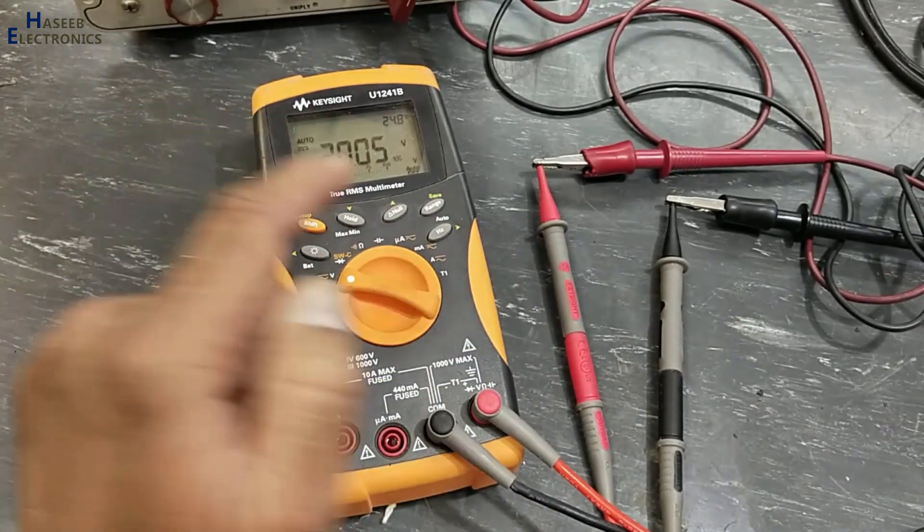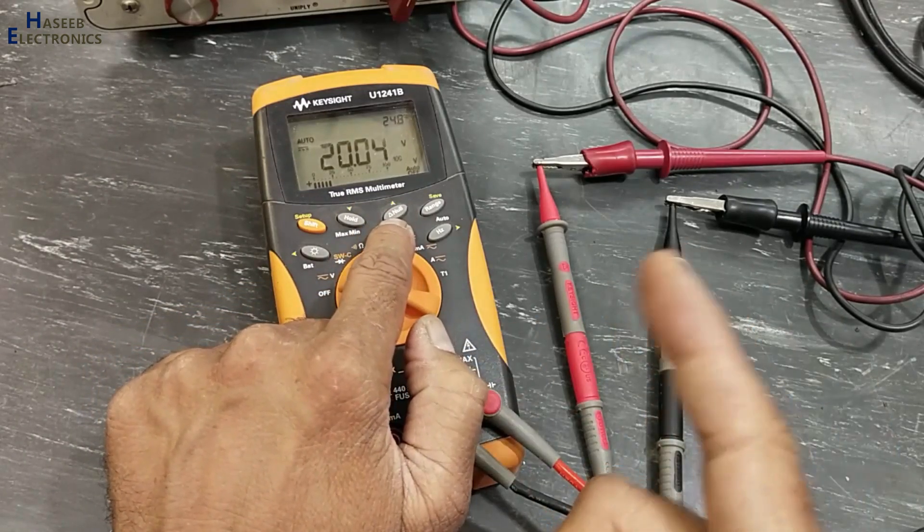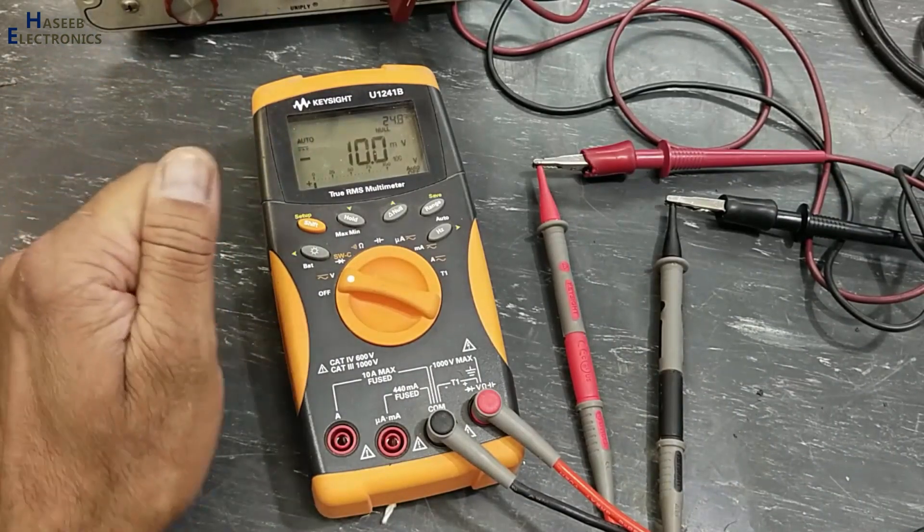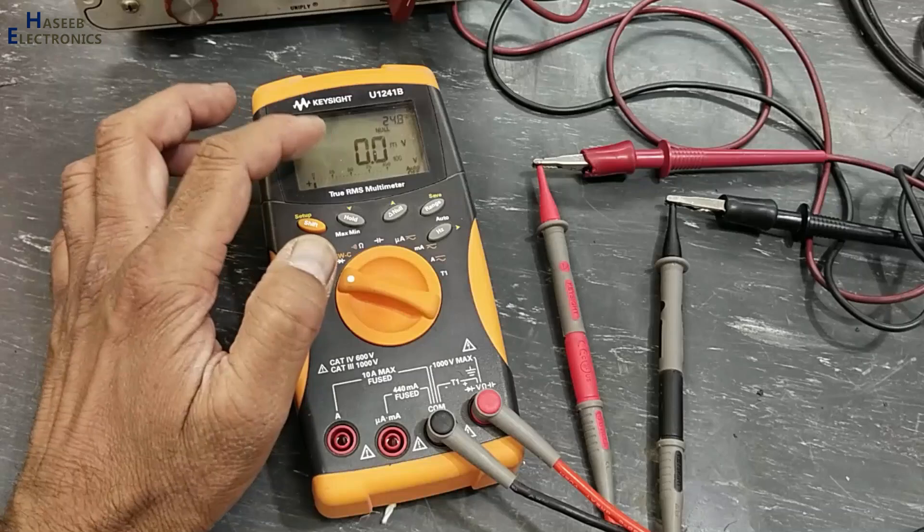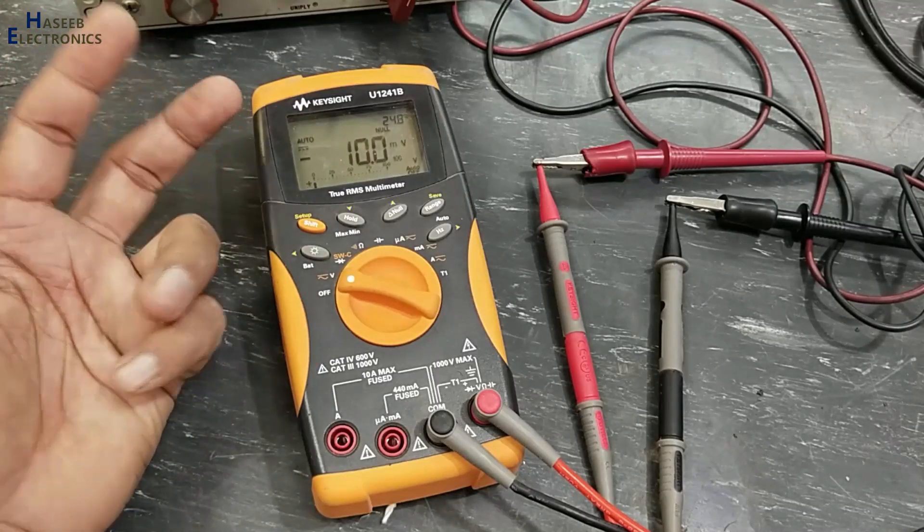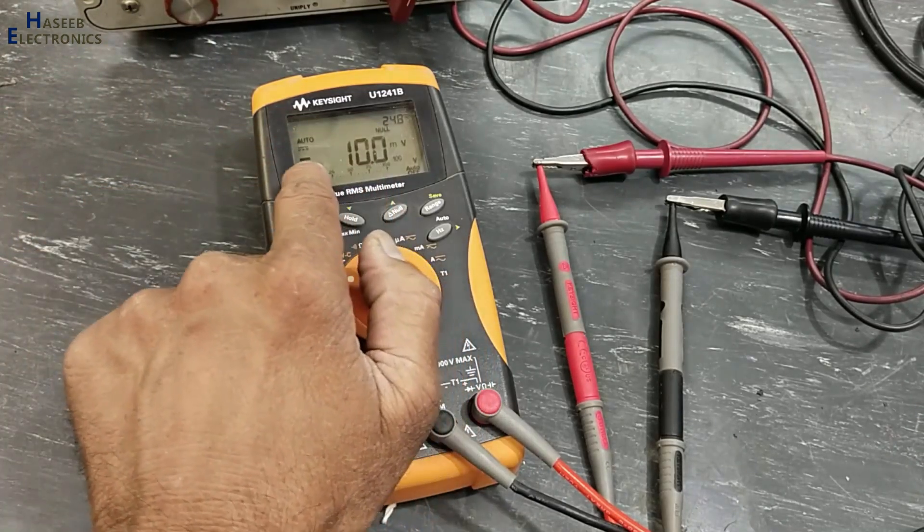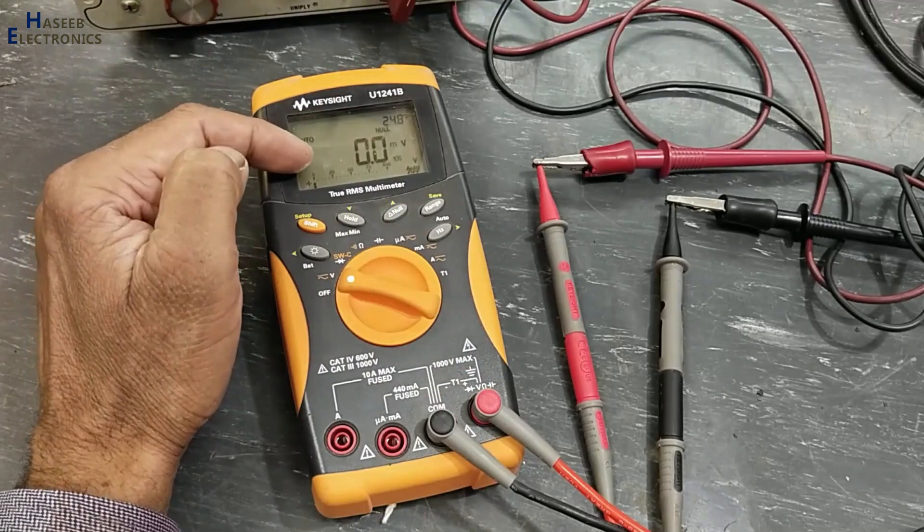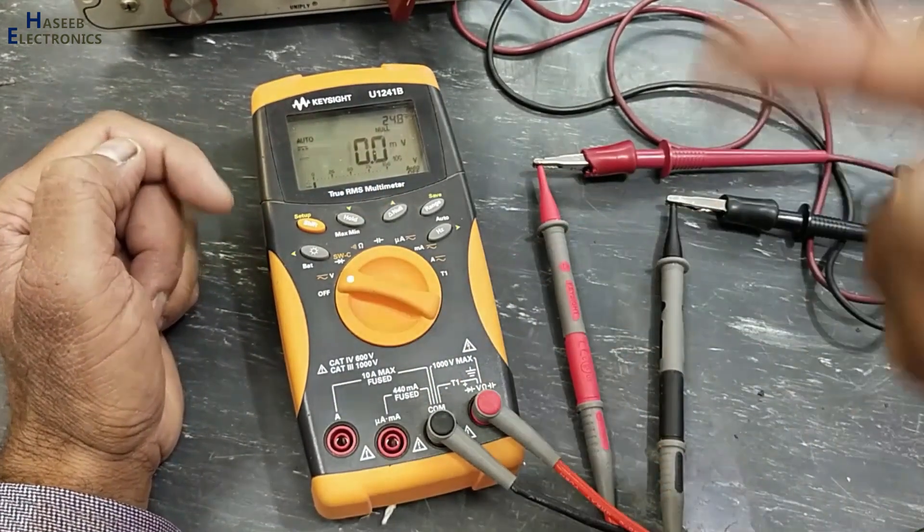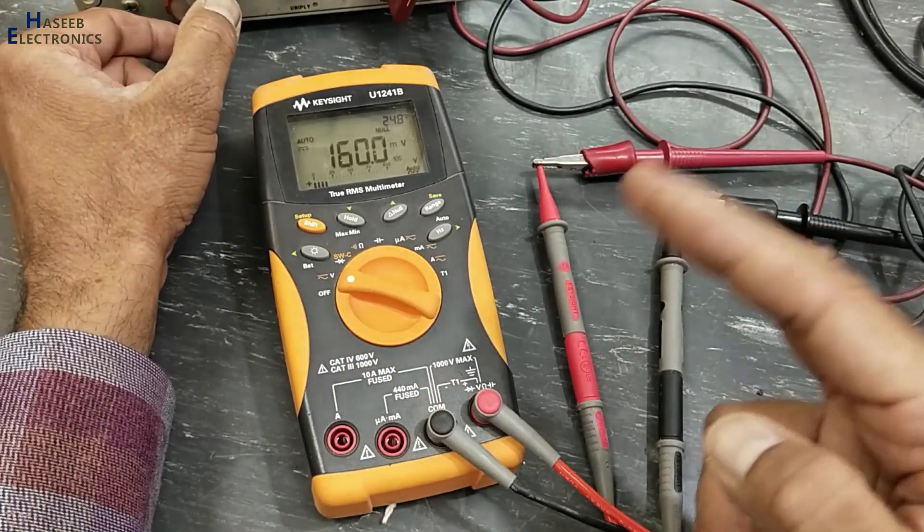If we will press this button null or rel relative function, now it stored that value in its memory and now it is checking how much voltage is increasing or decreasing. So it will subtract that reading, it will show us plus or minus. If the figure is in plus, that means plus one volt is increased in that level, 160 millivolt increase in positive side.